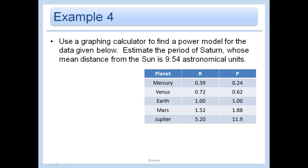For our final answer, we want to write the power function. So y equals 0.96x to the 1.322. Finally, in this problem, use a graphing calculator to find a power model for the data given below. Estimate the period of Saturn, whose mean distance from the Sun is 9.54 astronomical units. And I should have put here that r is the distance, and that's in astronomical units, and p represents the period, which is in years.